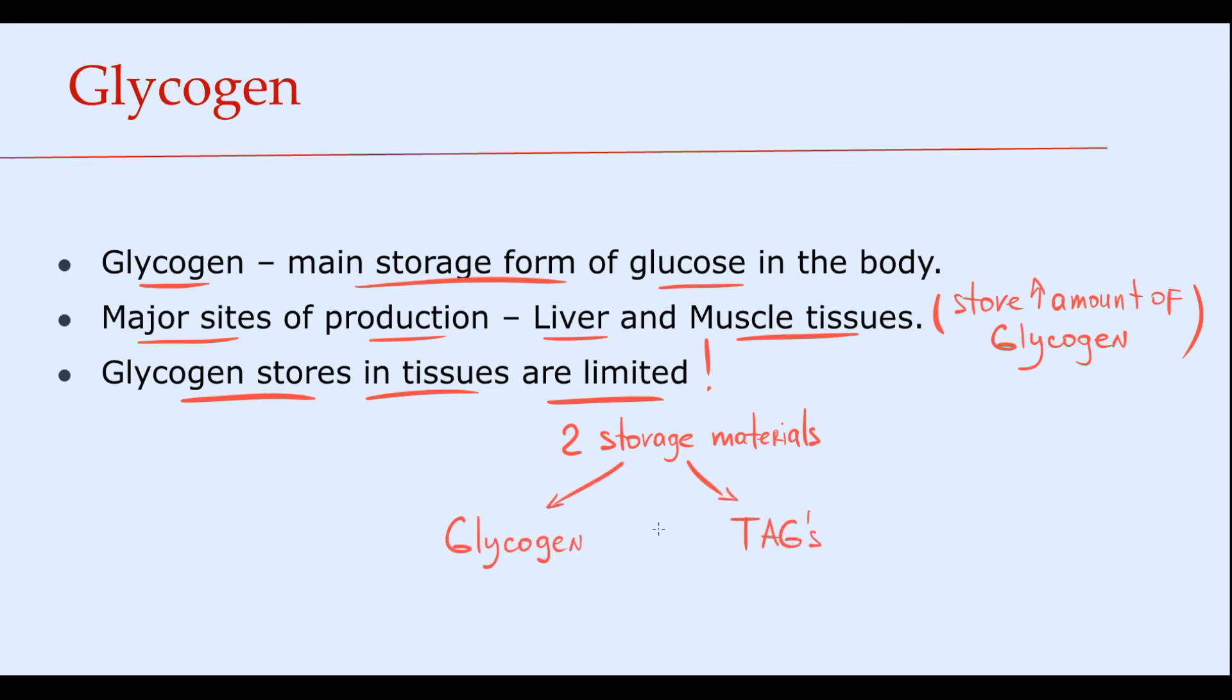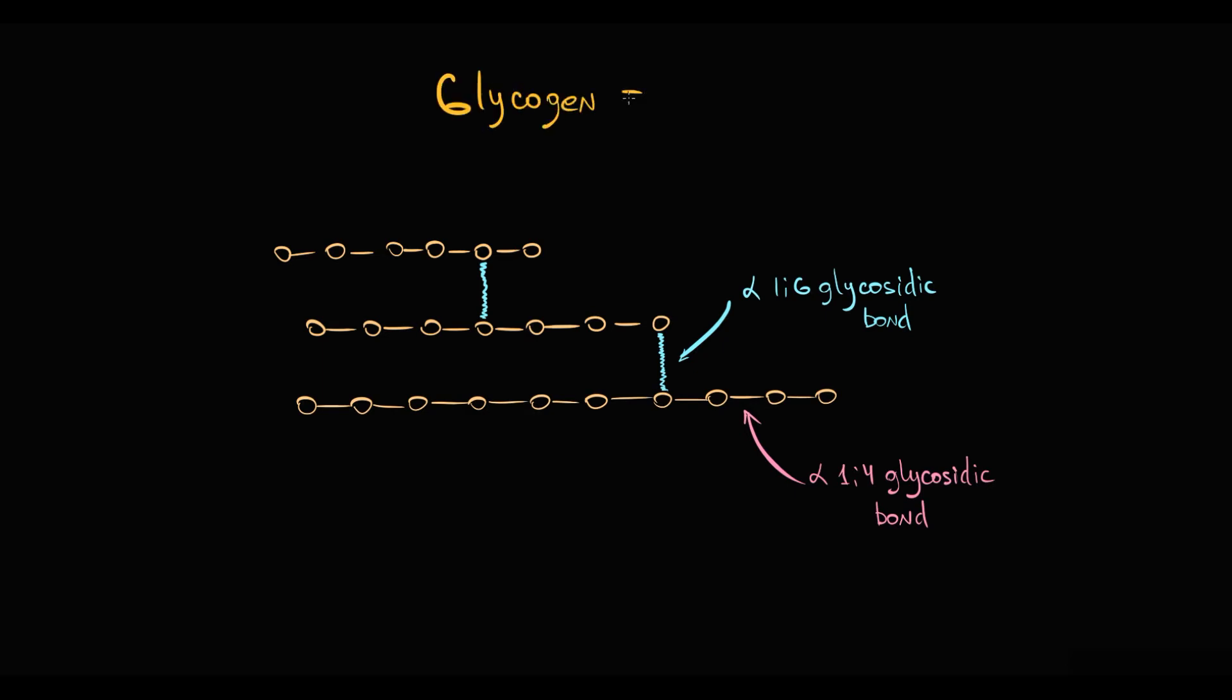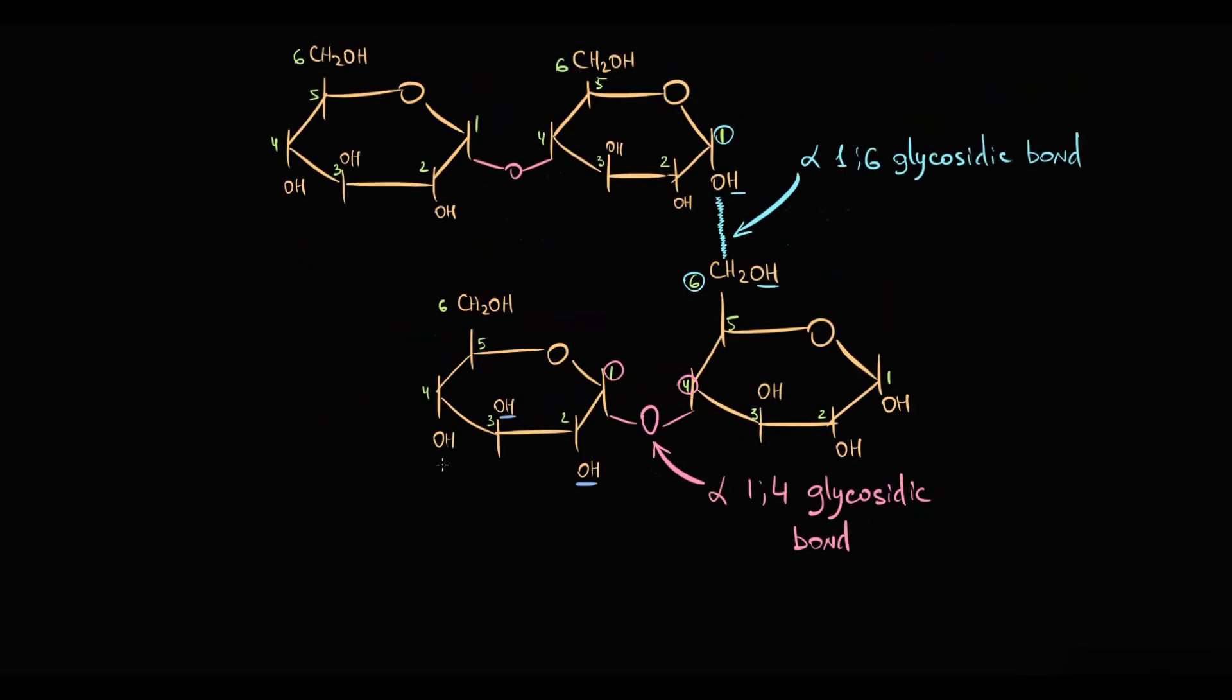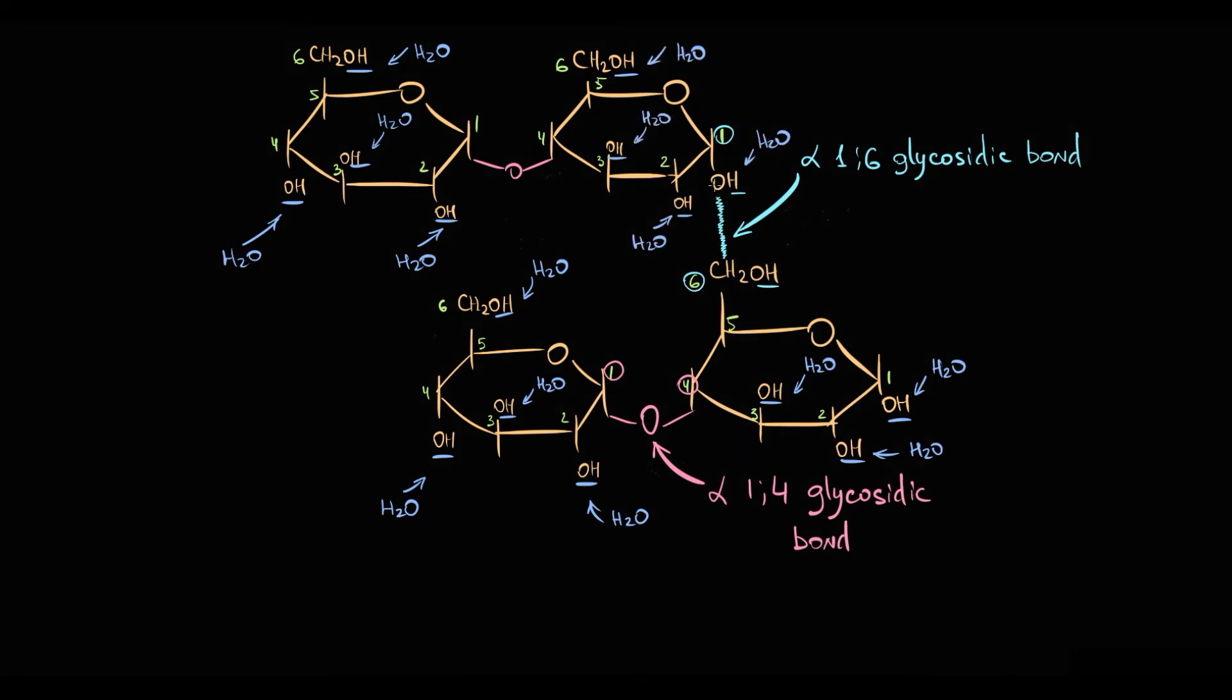Basically, as we see, glycogen is the assembly of glucose molecules. And the major problem with glucose is that glucose has a lot of hydroxy groups, and these hydroxy groups attract water. So because glucose is a highly hydrophilic molecule, when liver tissue, for example, stores glucose, with glucose, liver tissue also stores a lot of water.